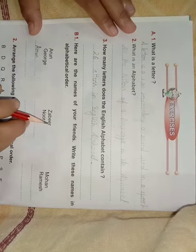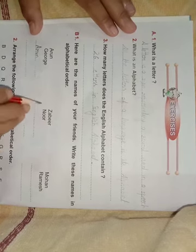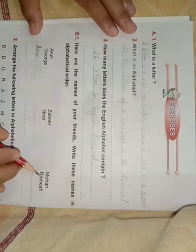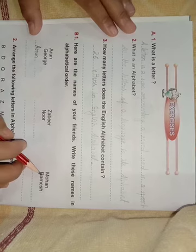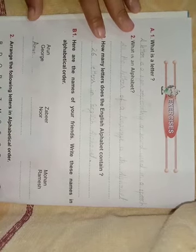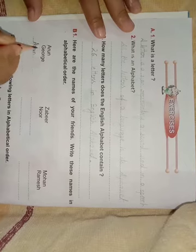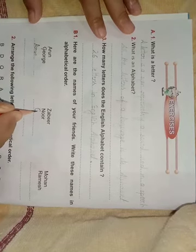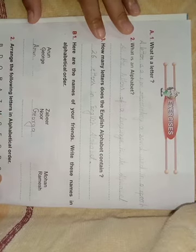A after B — is there a name starting with B? No. C? D? E? F? G — George! G, E, O, R, G, A — George comes next in alphabetical order.